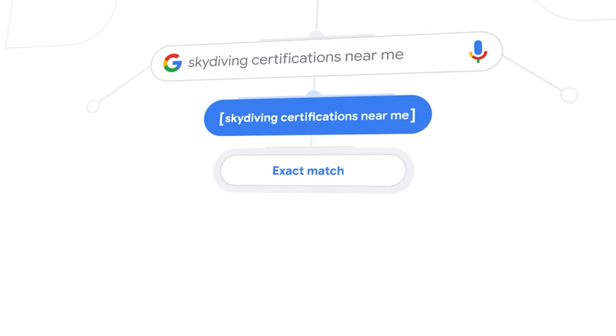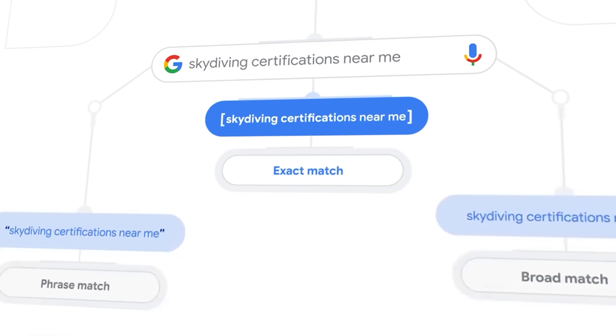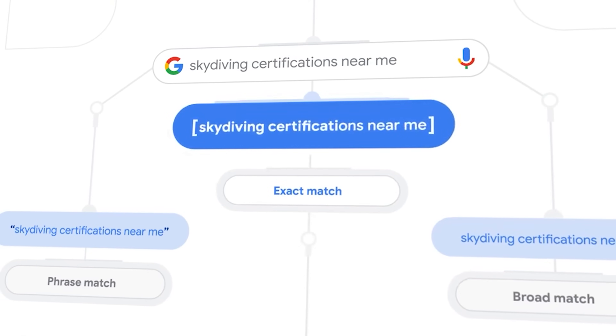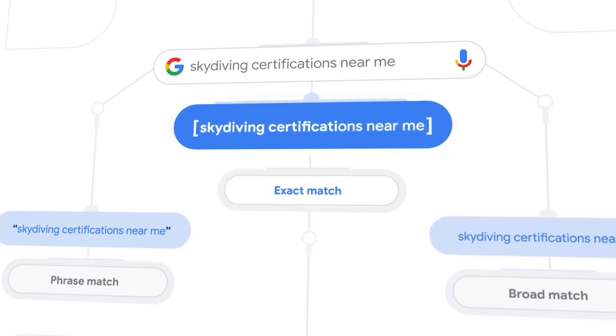If you've been involved with Google Ads for more than two years, you will know that over the past two years Google has been rolling out some significant changes. One of the most significant changes is the way that Google Ads has changed its match types. Historically in Google Ads there were three main different types of keyword match types: exact match, phrase match, and broad match. Those three types still operate, but they operate very differently.